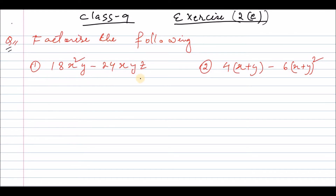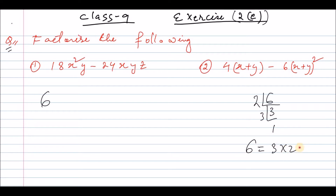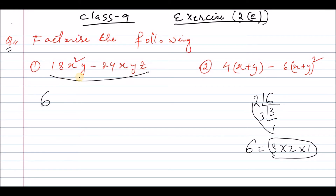Factorize the following — this means that if you have a polynomial, factorize the following. 2 into 3 into 1, so we have 6. And when you multiply this, this is the polynomial.